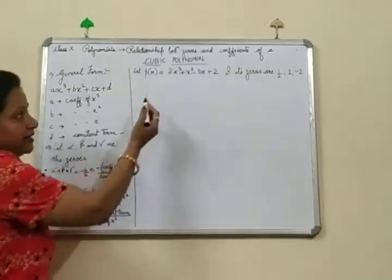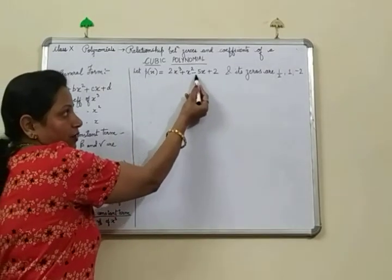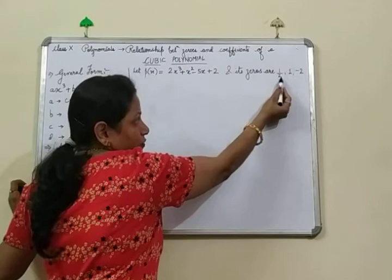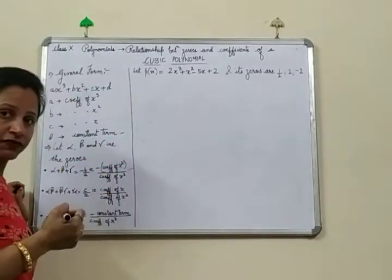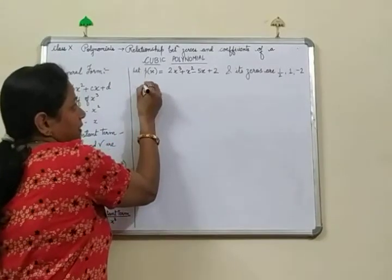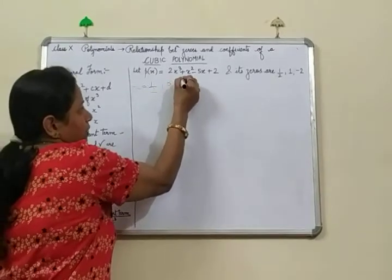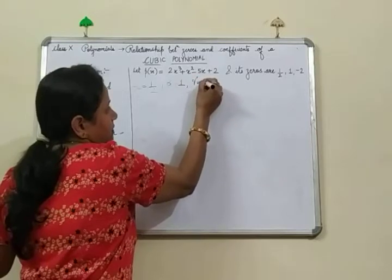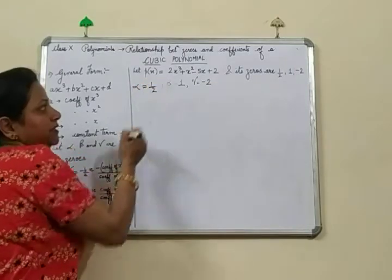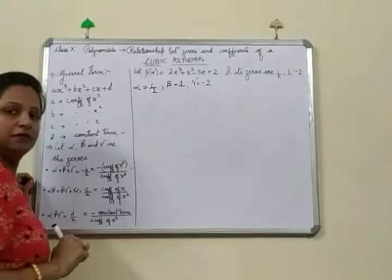Now let us take an example. Let p(x) be a cubic polynomial: 2x³ plus x² minus 5x plus 2. And its zeros are 1/2, 1, and minus 2. So alpha equals 1/2, beta equals 1, and gamma equals minus 2.